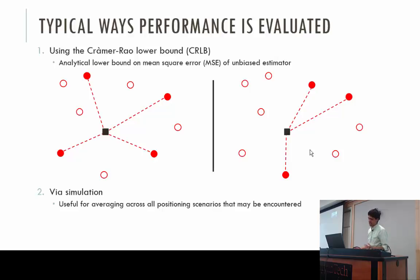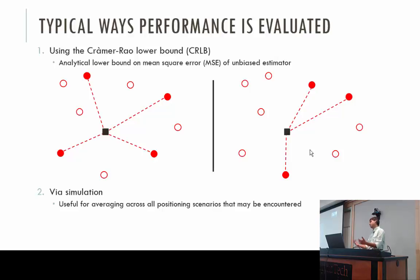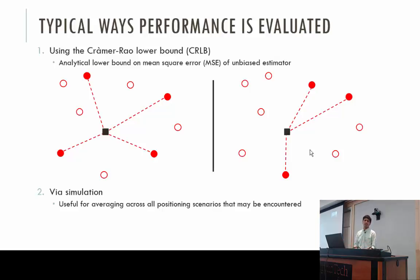When you want results averaged over all scenarios a mobile device might encounter throughout a cellular network, research turns to simulation. Simulation is useful because you can simulate many different scenarios and aggregate the results. But simulations can be complex to build, and it's not always intuitive to draw out trends or understand how different network parameters affect positioning performance. If you want to change the base station density, you go into your simulation, change it, and rerun the whole simulation.